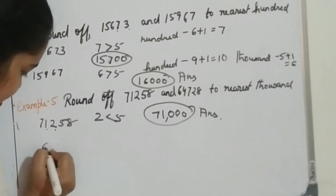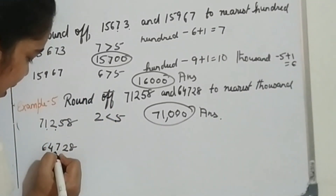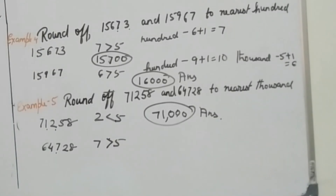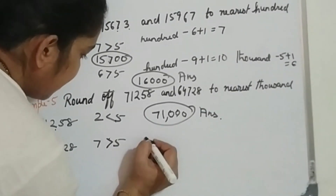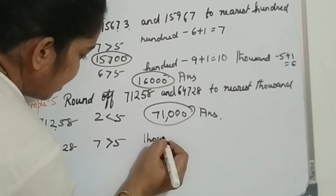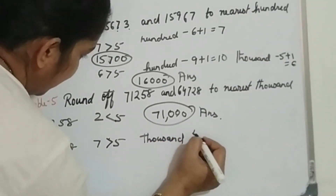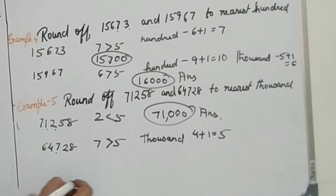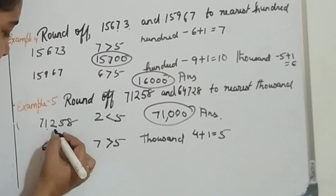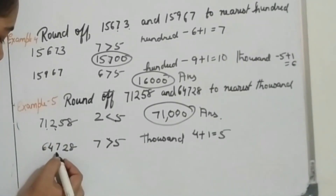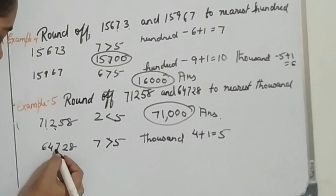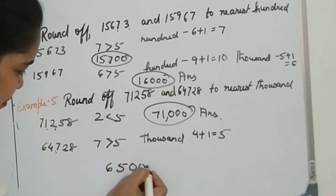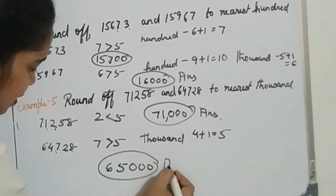Now the next one is 64728, where you can see 7 is in the 100s place. Since 7 is greater than 5, in the 1000s place the number will be increased — 4 plus 1 equals 5. The rest of the digits in the 100s place, 10s place, and 1s place will be 0. So the answer will be 65000.